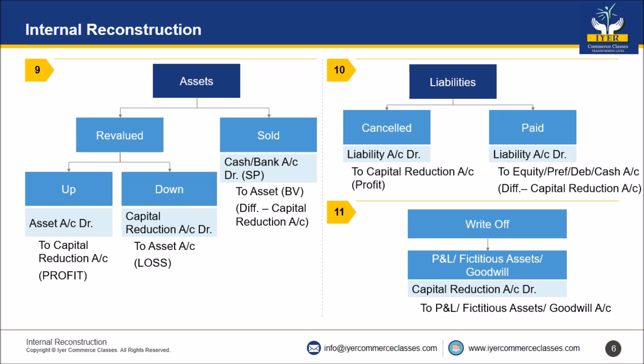In every question, whether they mention it or not, you must write off the Profit and Loss Account debit balance, any fictitious assets, and goodwill. These items must be written off whether the problem mentions it or not. The entry will be: Capital Reduction Account debit, to Profit and Loss Account or Fictitious Assets Account or Goodwill Account, as the case may be. Thank you very much.